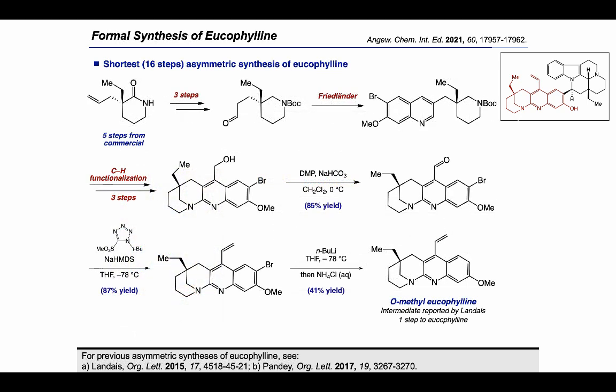Having accomplished sequential C–H functionalization, we advanced the intermediate to Leucofoline in four additional steps: DMP oxidation of the alcohol to the aldehyde, Julia–Kocienski olefination with a tetrazole, protodebromination, and demethylation as reported by Landais and co-workers. Overall, this 16-step synthetic route currently represents the shortest asymmetric synthesis of Leucofoline.